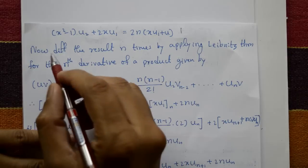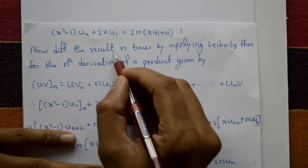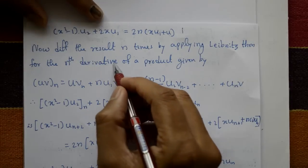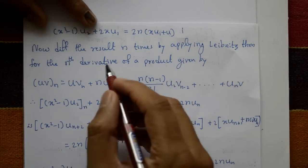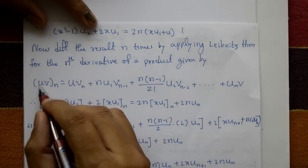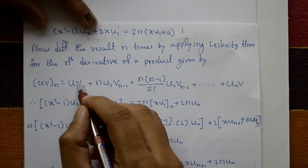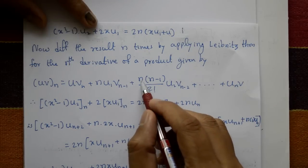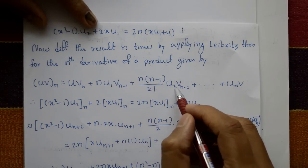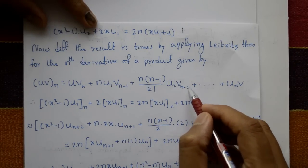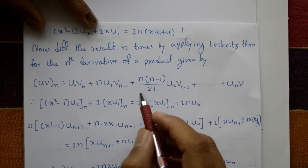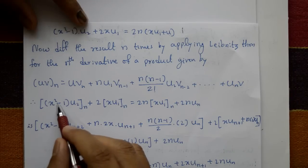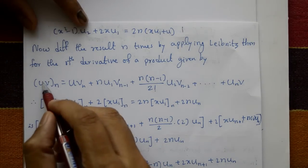Now differentiate the result n times by applying Leibniz's theorem for the nth derivative of a product. Leibniz's rule: (uv)_n = u·v_n + n·u₁·v_{n-1} + n(n-1)/2! · u₂·v_{n-2} + ... Now taking the first term (x² - 1)·u₂, applying this to u_n.